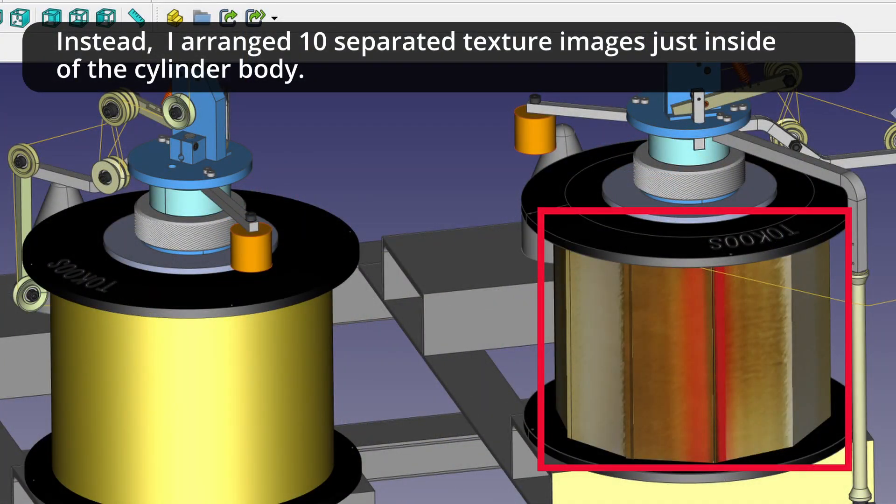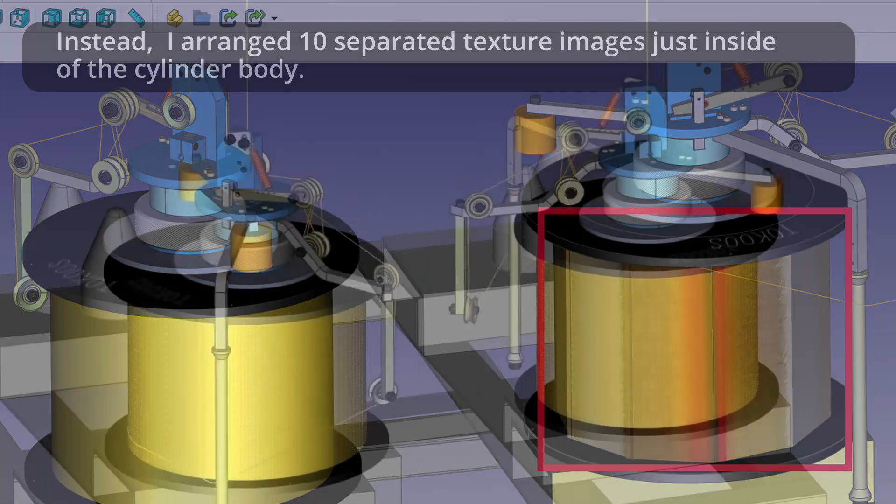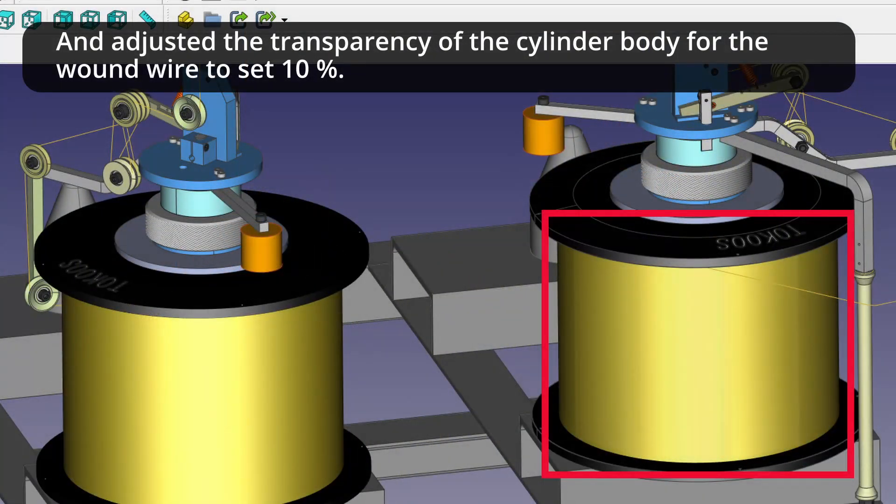Instead, I arranged 10 separate texture images just inside of the cylinder body. And adjusted the transparency of the cylinder body for the wound wire to set 10%.